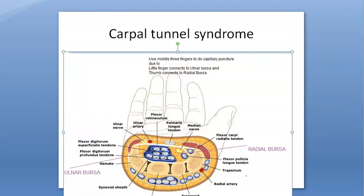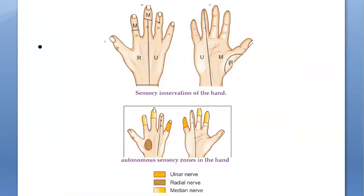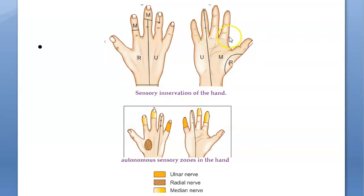The person will complain of discomfort in the thumb — the radial one and a half fingers, which is the median nerve distribution. So we're talking about median nerve compression affecting the thumb and the radial one and a half fingers, and the tingling is especially prominent during sleep.